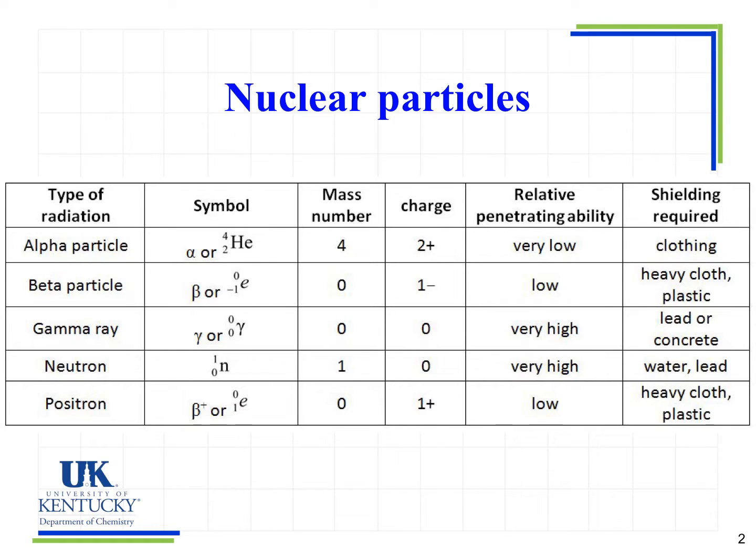As we move on down what we see is that we see a beta particle which basically looks like an electron and either one of these symbols will represent that beta particle. No mass, a charge of minus one so we see that here the mass numbers on top we see zero and then the charge of minus one on the bottom. Low penetrating ability.